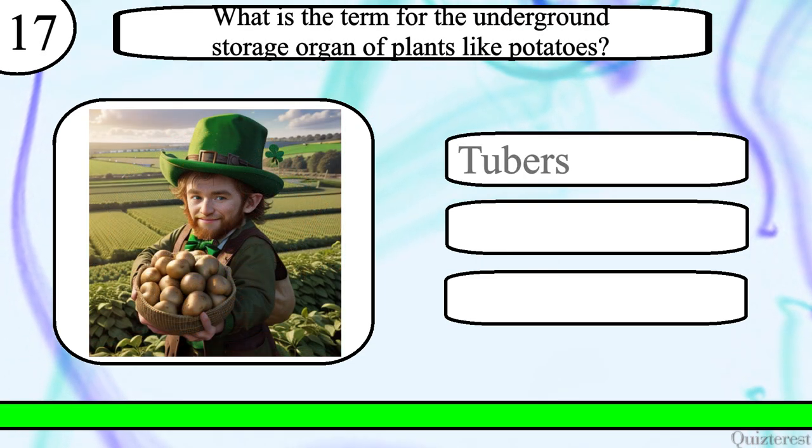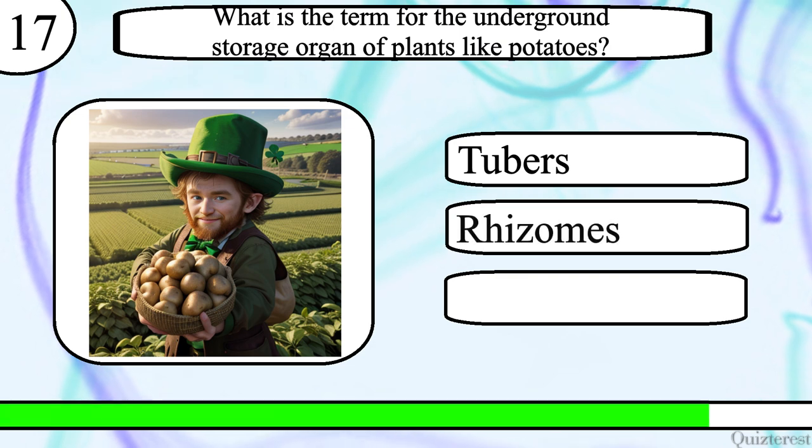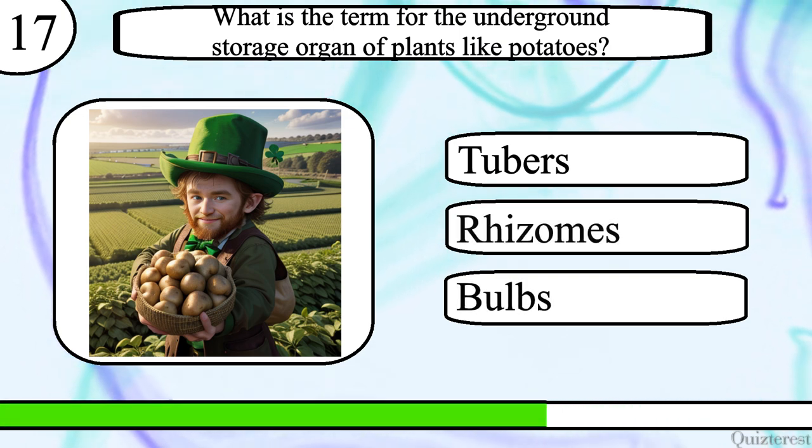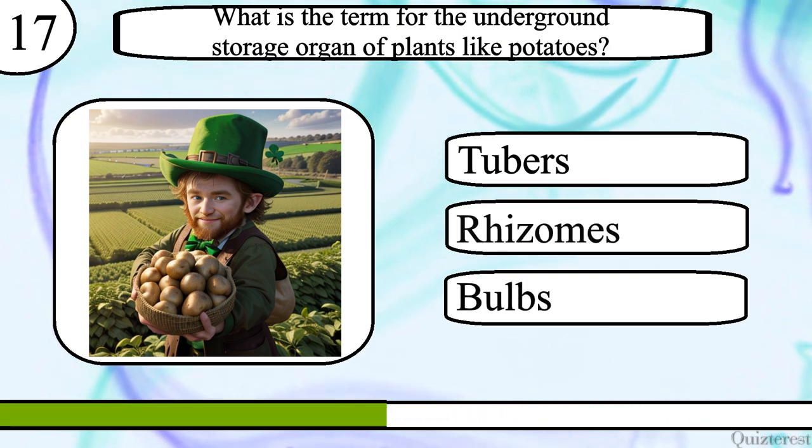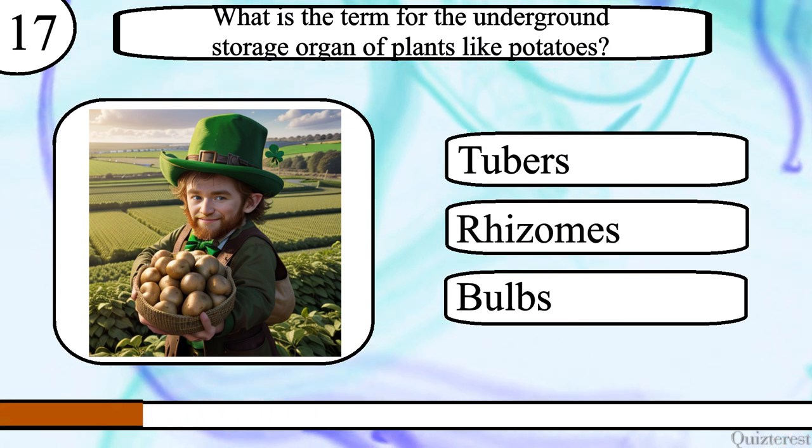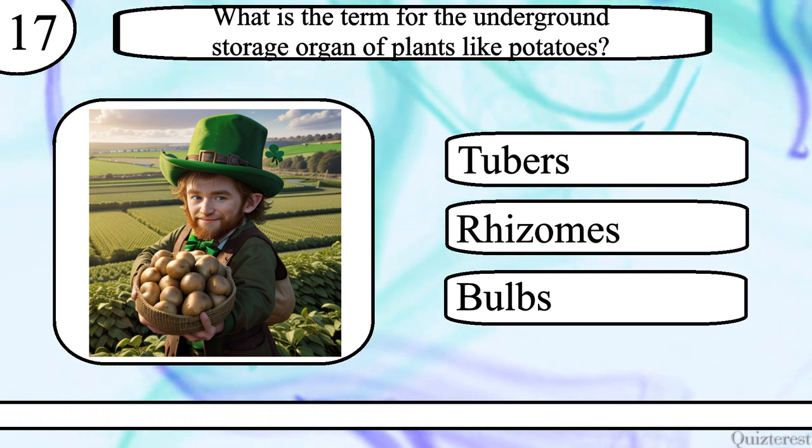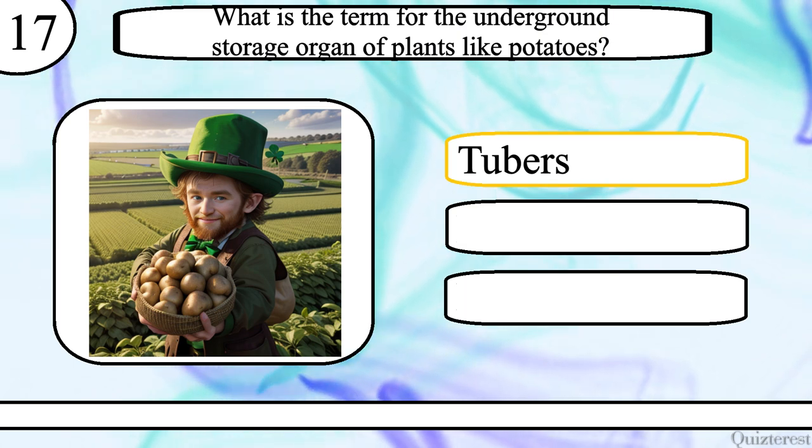Question 17. What is the term for the underground storage organ of plants like potatoes? Tubers, rhizomes or bulbs? The correct answer is tubers.